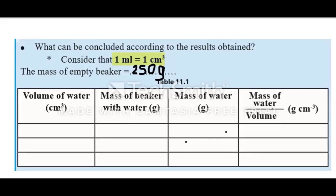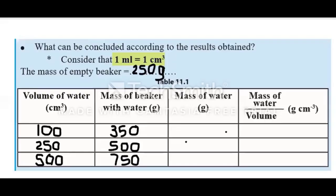The final column is the ratio between mass of water and volume. Now let's record the volume of water and the mass of beakers with water. The mass of the beaker with 100 cubic centimeters of water is 350 grams, the mass with 250 cubic centimeters of water is 500 grams, and the mass with 500 cubic centimeters of water is 750 grams.